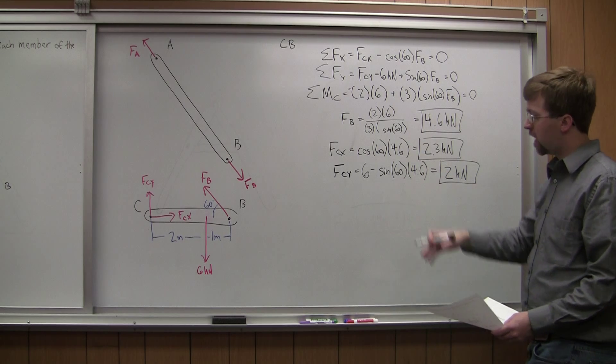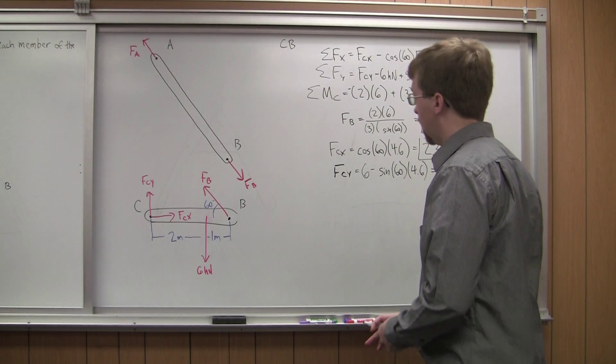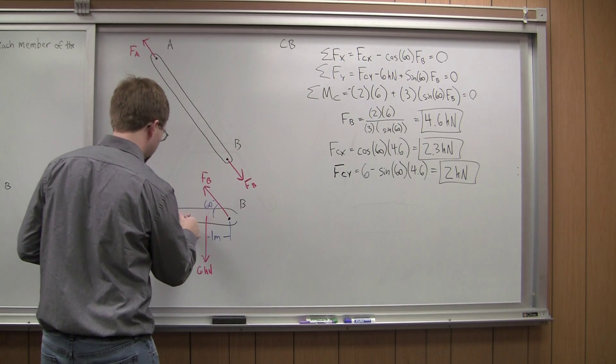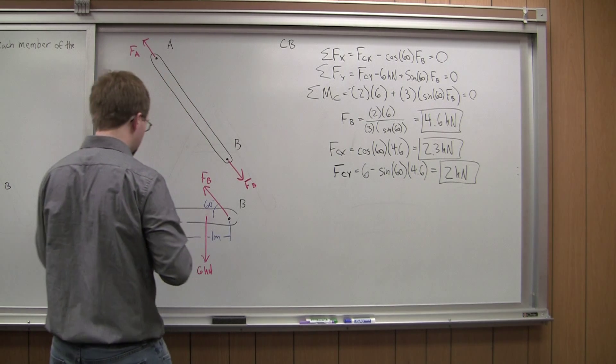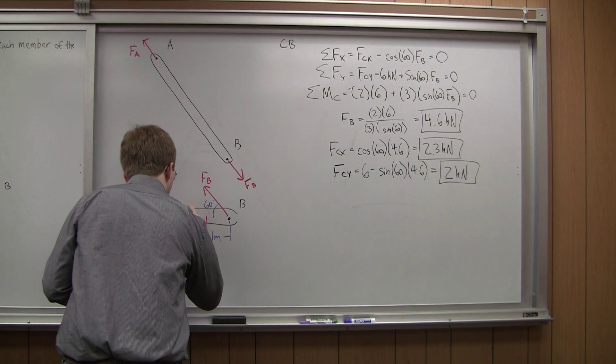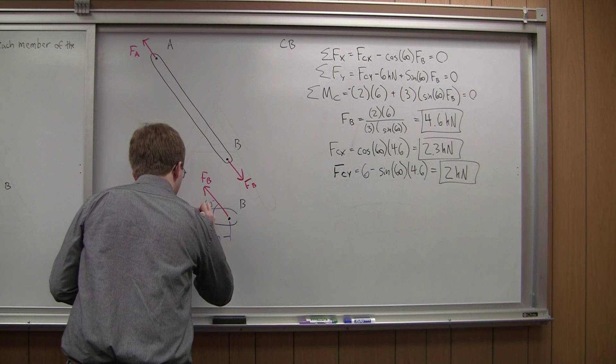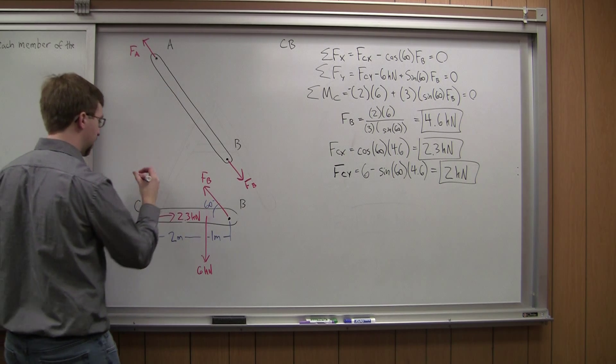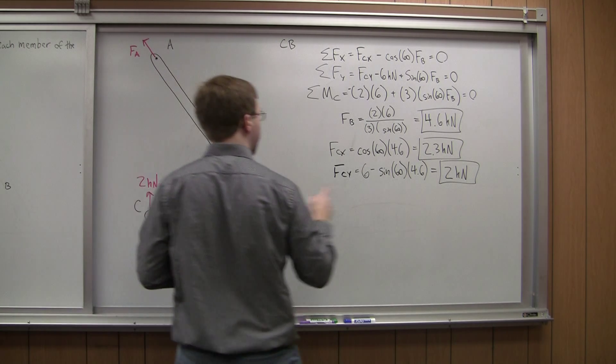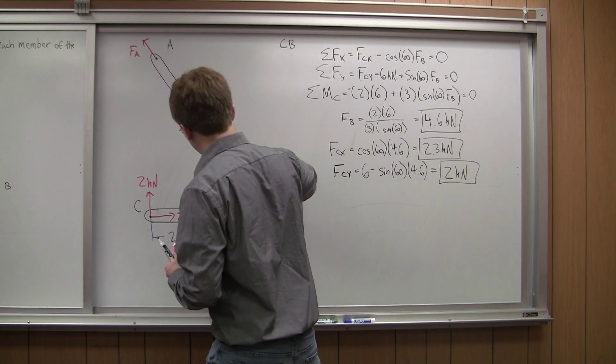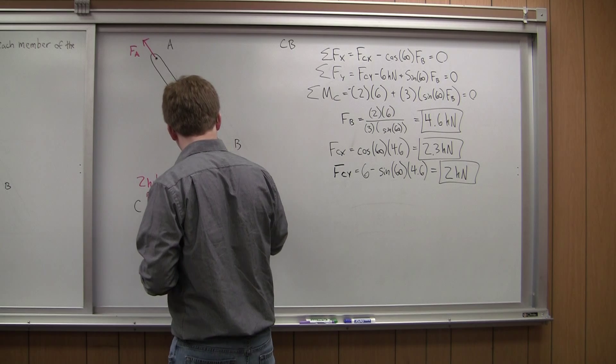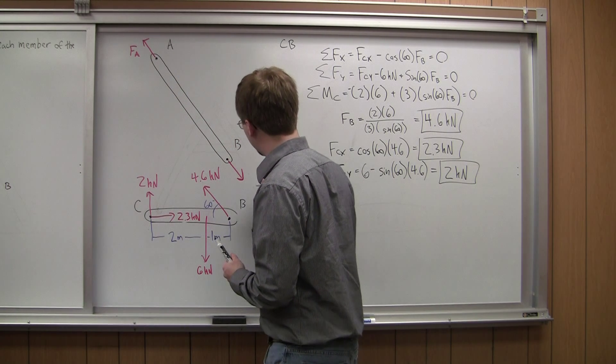Alright, so let's go back and I'm going to draw some of these in to my original diagram over here. So I know that FCX, that was equal to 2.3 kilonewtons. I know FCY, that was equal to 2 kilonewtons. And FB was 4.6 kilonewtons. And I've also got FB acting over here.